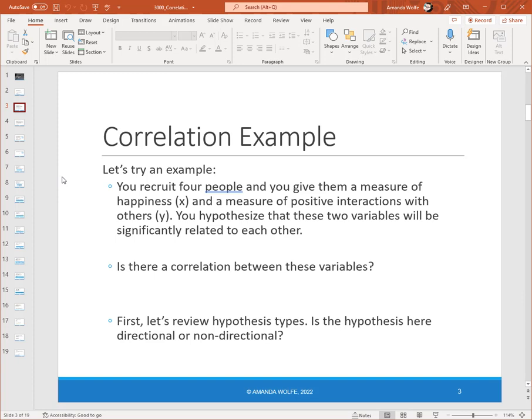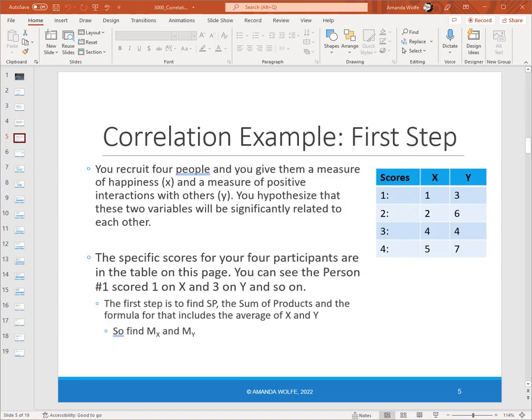So let's try an example. Let's say you recruit four people and you give them a measure of happiness, which will be variable X, and you give them a measure of positive interactions with others, which will be variable Y. You hypothesize that these two variables will be significantly related to each other. So now that we've handled the hypothesis, let's get back to calculating this.